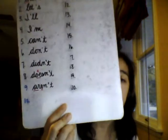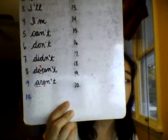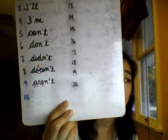Number nine: aren't, contraction for 'are not.' We aren't going outside because it is raining. Think to spell A-R-E — silent E — N-O-T. Aren't — we drop the O and get aren't. Spell out loud: A-R-E-N apostrophe T. Aren't, short for are not.